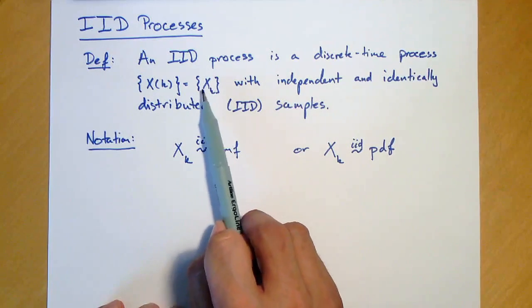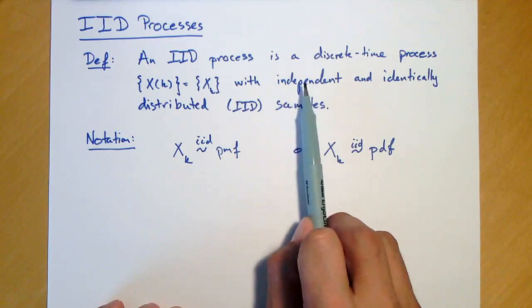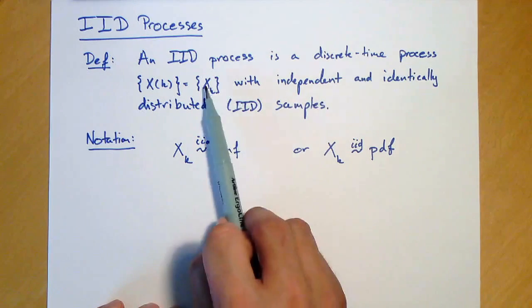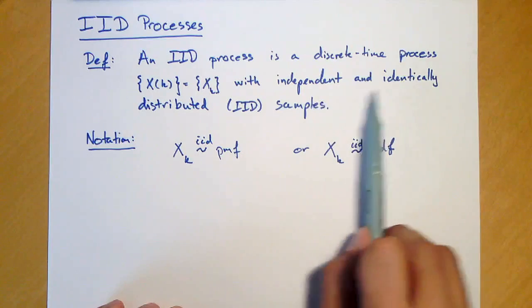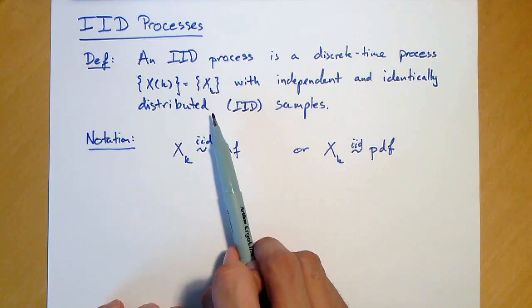So that means that all the xk's here are independent. There are no statistical dependency between samples and time. And they also have the same probability distribution.